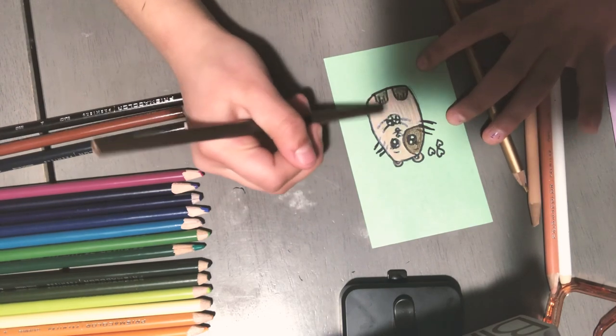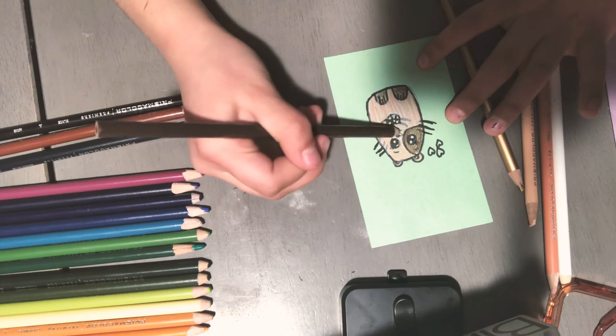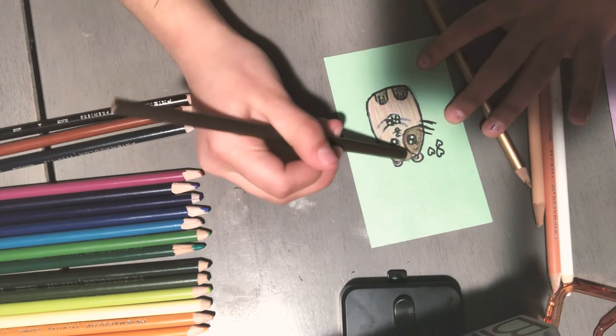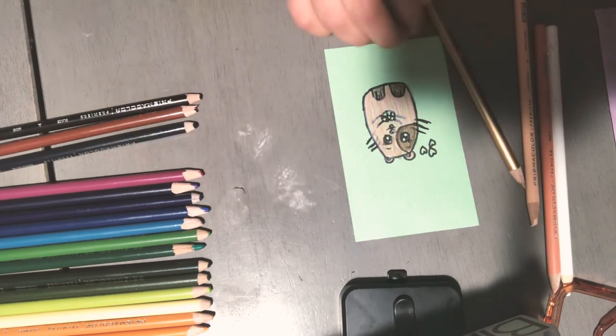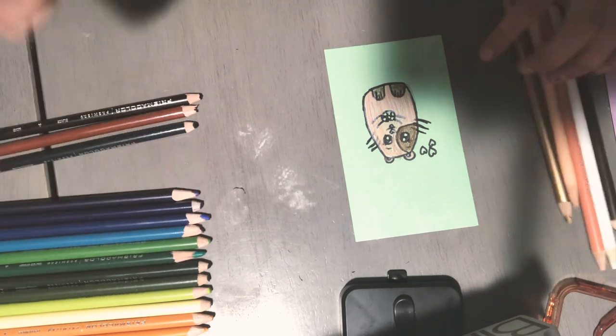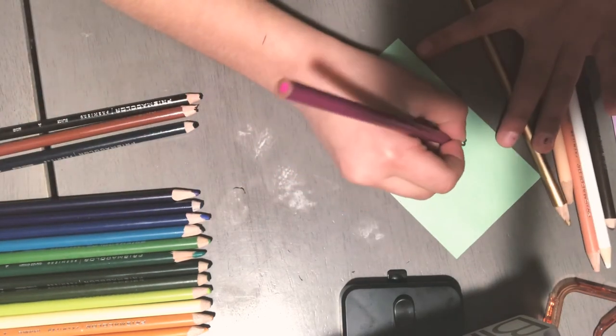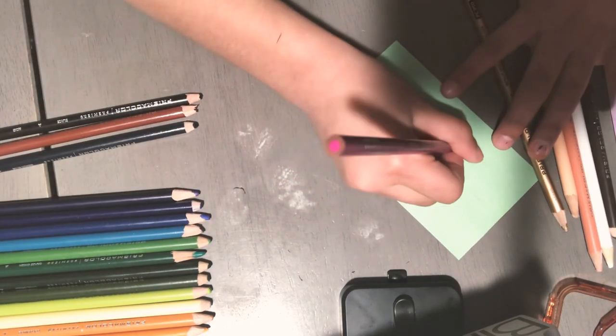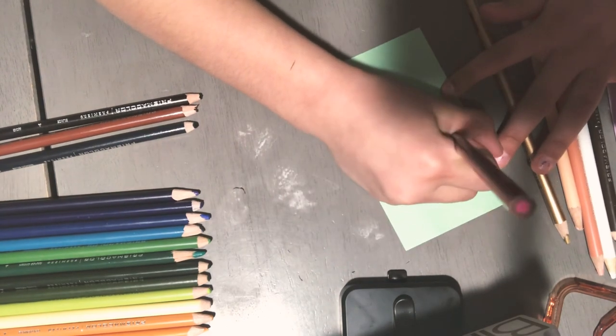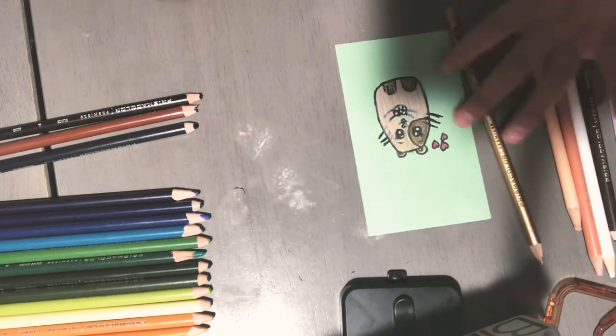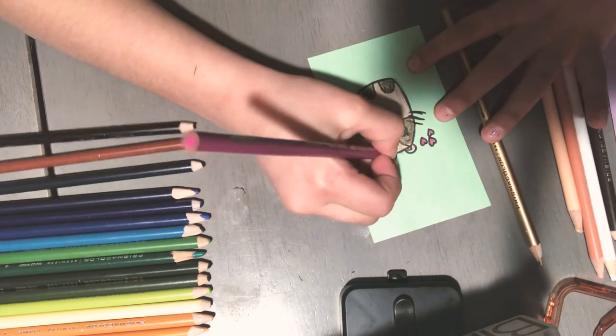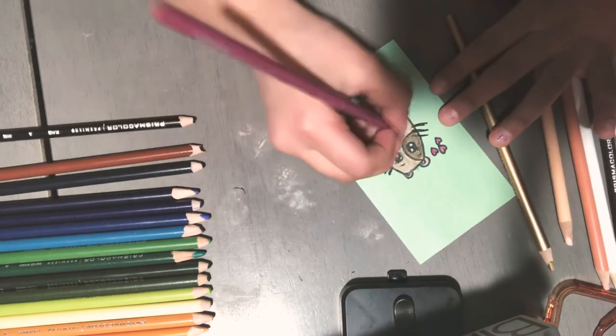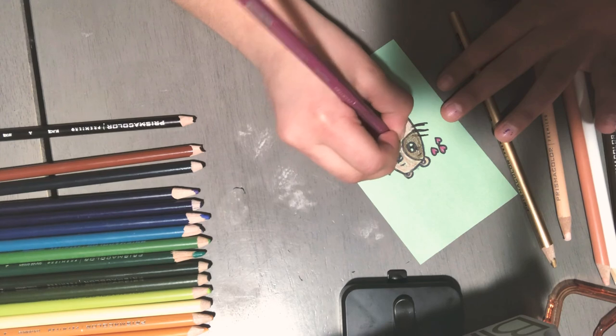This is kind of like a darkish hamster, but you could use any colors you like and customize your hamster to be any way that you want. I'm going to use this little pink for the hearts, for the little hearts beside this hamster, and for the inside of the ears and the nose and tongue.